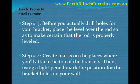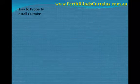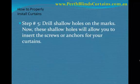Step number four, create marks on the places where you will attach the top of the brackets. Then, using a light pencil, mark the position for the bracket holes on your wall. Next, drill shallow holes on the marks. Now, these holes will allow you to insert the screws or anchors for your curtains.